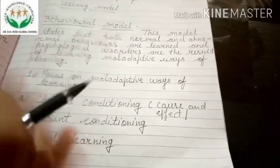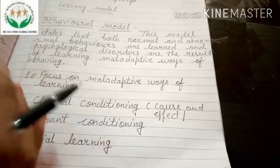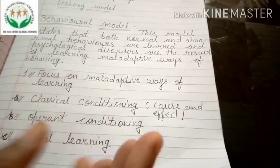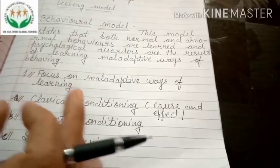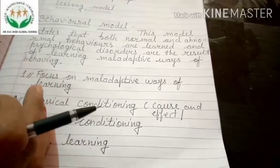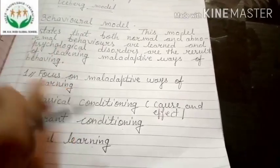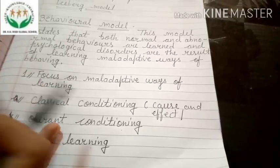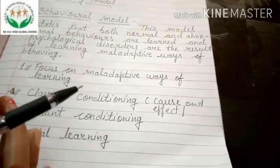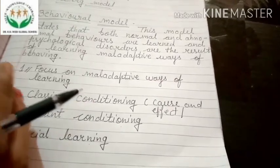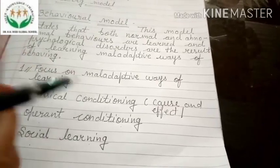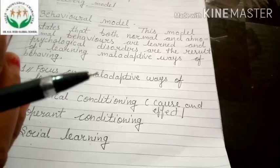But if we pair a natural stimulus with an already-conditioned stimulus — like in the dog experiment, pairing the dog's food with a bell — then the dog becomes conditioned to associate the bell with food. So when we show only the bell, saliva is produced as a conditioned response. He proved that learning can take place by classical conditioning in which two events repeatedly occur close together in time.